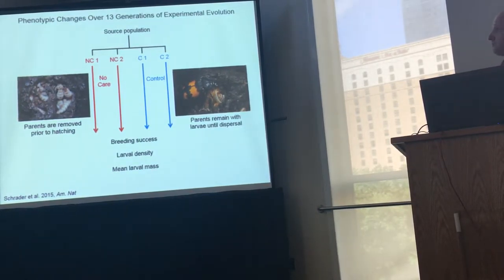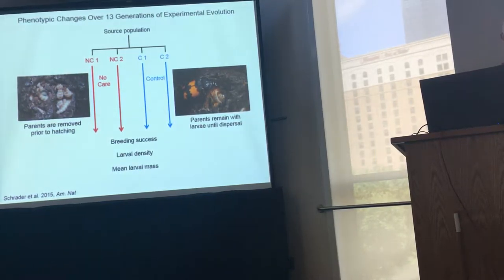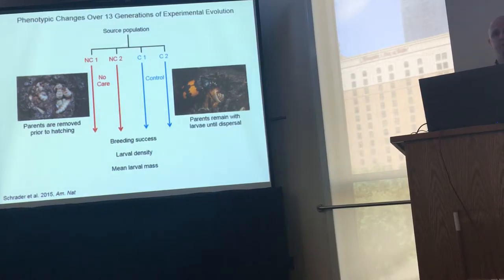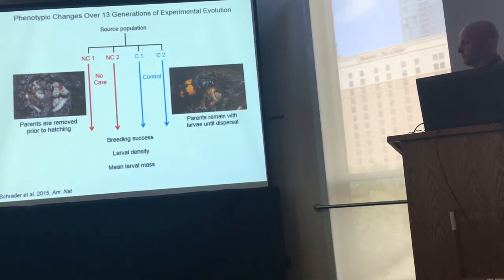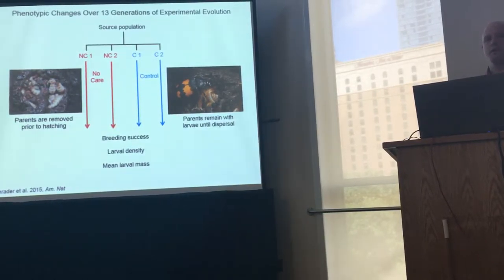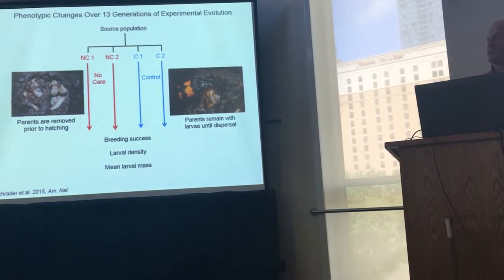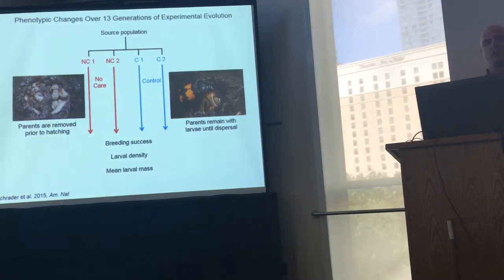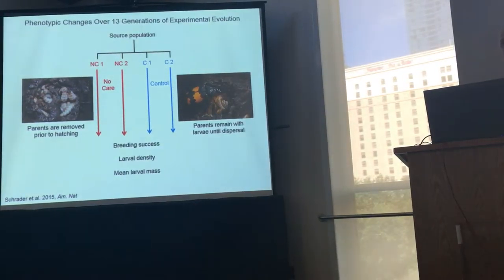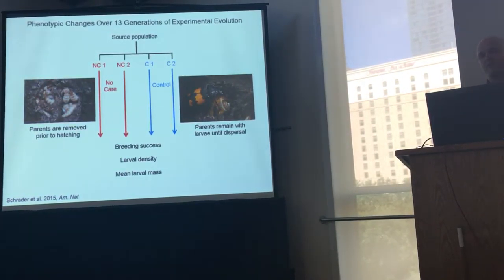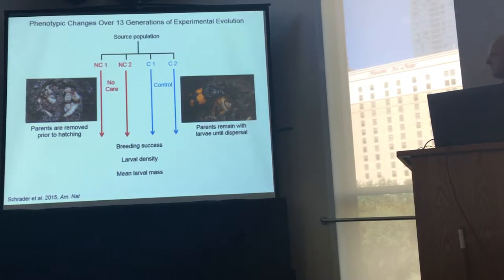What we've been doing is experimental evolution, where we've created two different environments for these beetles. In one environment, which I'm calling 'no care,' we remove parents after the carcass has been prepared and the clutch has been completed, but before the eggs hatch. So there are no interactions between the parents and their offspring — no post-hatching parental care at all — and these larvae are on their own until they disperse. In the other environment, our control, the parents remain in the breeding box with the larvae for the entire larval period, allowing the full scope of parent-offspring interactions. The ultimate goal of this experiment is to see how adaptation to these two different environments affects the genetic correlation between parental and offspring behaviors.